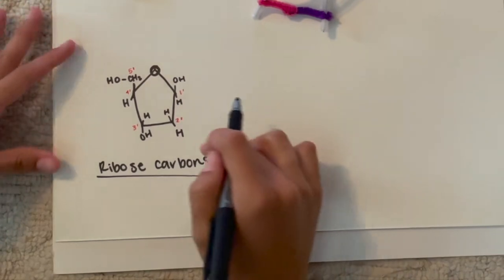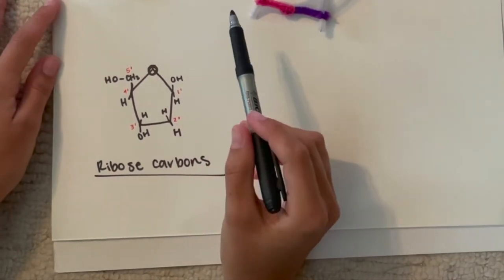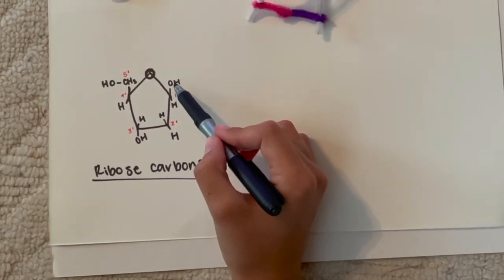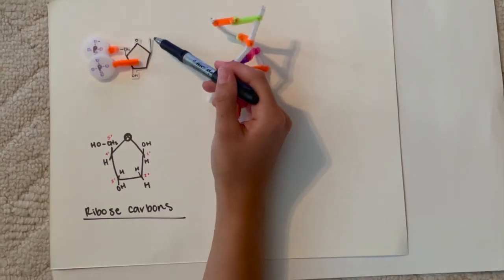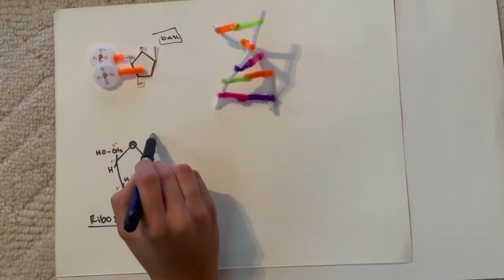So down here we have the ribose carbons and we're going to talk about their significance. So carbon 1 has an OH bond connected to it. This is where it will connect here, it would connect to the base.